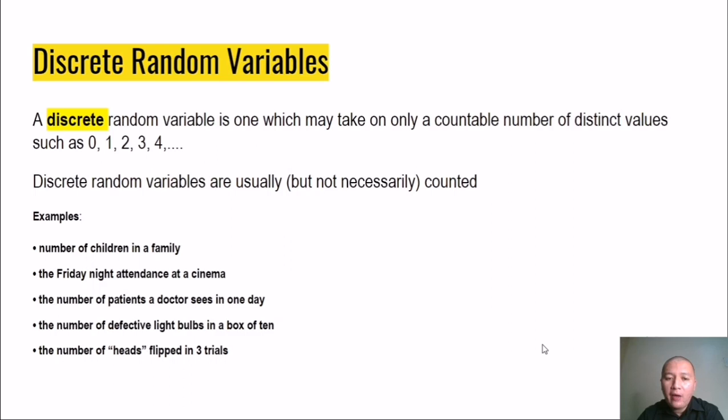We cannot say 3 and a half, 4 and a half, 5 and a half, and so forth. All of those numbers must be a specific discrete number, numbers that can be counted. In the same manner, the Friday night attendance in a cinema - let's say a movie is shown in a particular cinema - you can count the number of attendees. You cannot say the attendance was 24 and a half or 50 and a half.